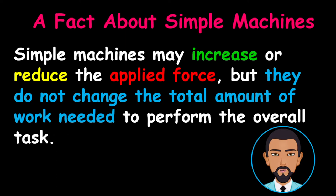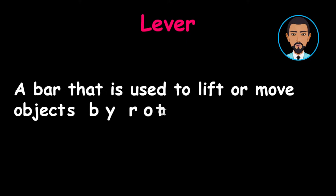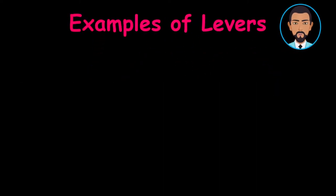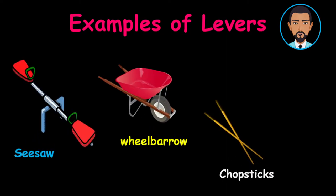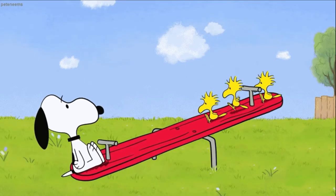Let's now define each type of simple machine and look at some examples, starting with levers. Do you know that levers are very common machines around our houses? A lever is a bar that is used to lift or move objects by rotating at a fulcrum. Some examples of levers include seesaw, wheelbarrow, chopsticks, and scissors. Don't you think Snoopy is too far from the pivot?